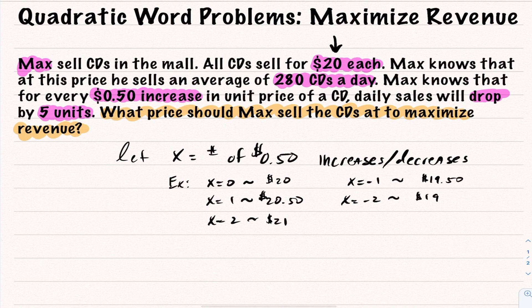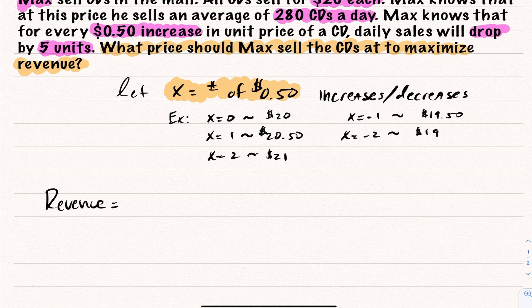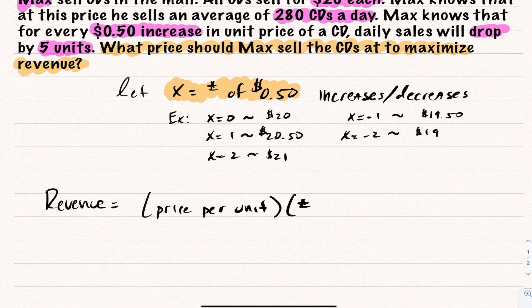At X equals negative two, the CD would go down to $19. What's important here is that X represents the number of 50-cent increases. Now we want to create a revenue relation — I want to maximize that, so I have to figure out what the revenue relation looks like. Revenue is equal to the price per unit multiplied by the number of units sold.